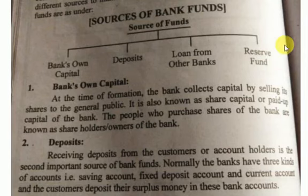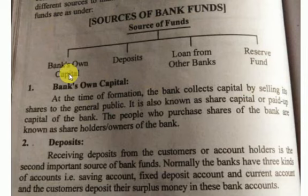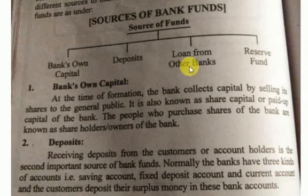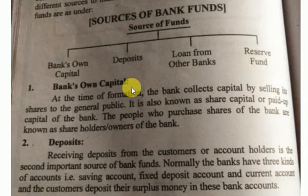Hamare saamne nazar aa raha hai hamaara topic: Sources of Bank Funds. Basically there are four sources. Number one is bank's own capital. Second one is deposits. Third one is loan from other banks. And fourth one is reserve fund. Ab inko one by one discuss karte hain ki yeh kaun se sources hain jinke through bank apne funds collect karta hai.